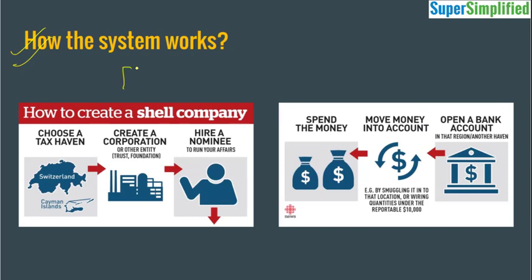Now, how does the system work? If you want to avoid tax or shift some amount to these countries, you have to create a shell company. First of all, you select a tax haven — for example, Switzerland. You have to create a corporation, entity, trust, or foundation there — some kind of legal entity. But the thing is, it is only created on paper. There is no brick-and-mortar organization, factory, or company which exists in that country. It has no operations, no employees, nothing. And then you appoint a nominee who will take care of running the affairs of this company on paper. This is how you invest a large chunk of your revenue into these countries.